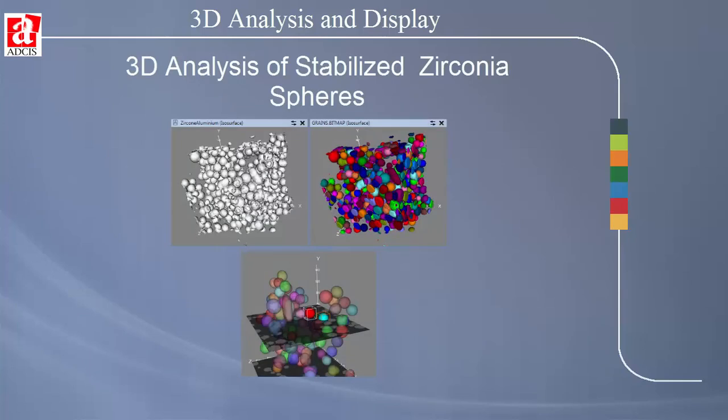Here is an example of how the Aphelion Imaging Software Suite can be used to characterize a 3D image. This is an image of stabilized zirconia spheres. Although the spheres are touching one another, they will be separated so that volume, surface area, sphericity, and nearest neighbor count can be measured.